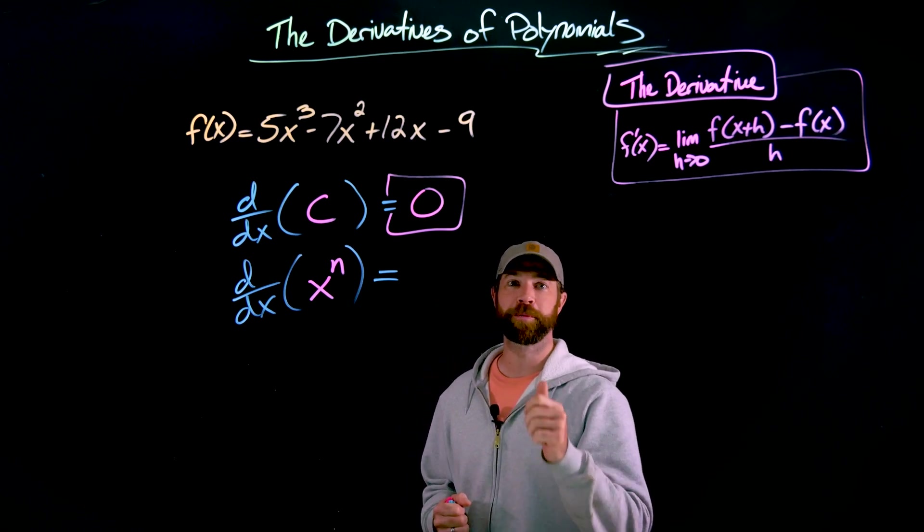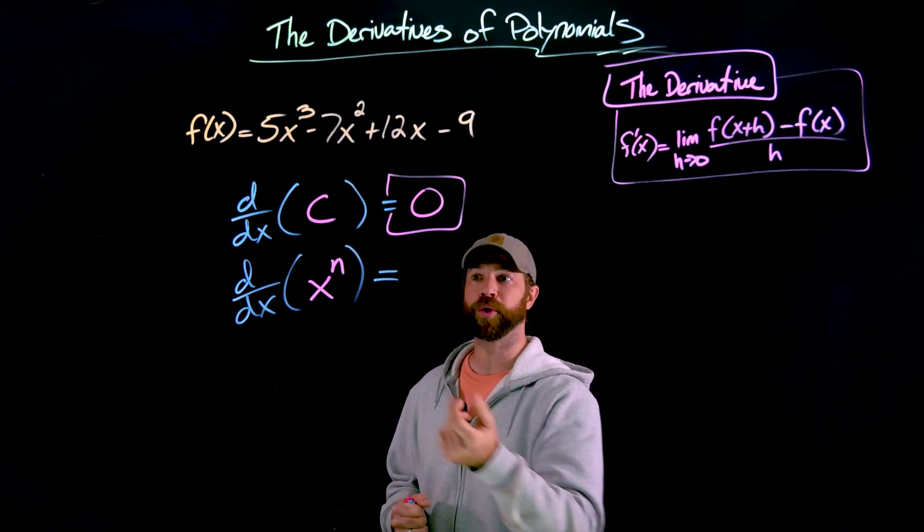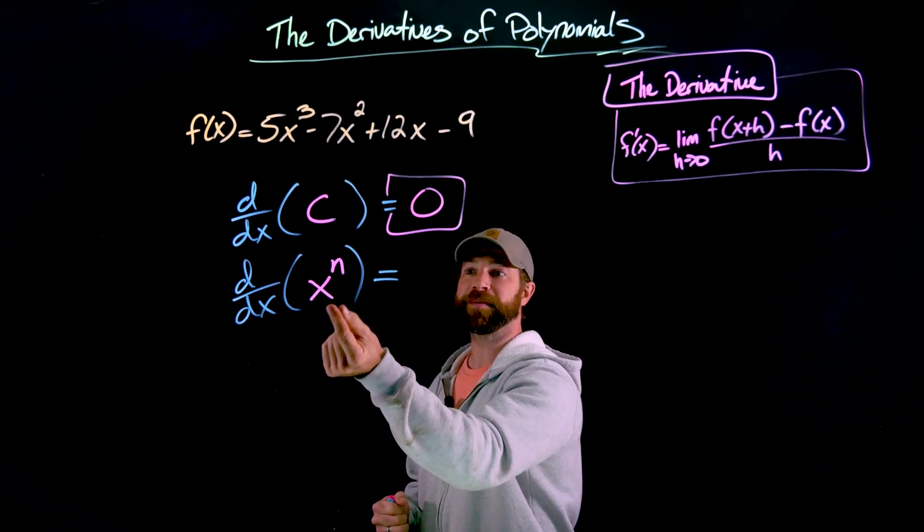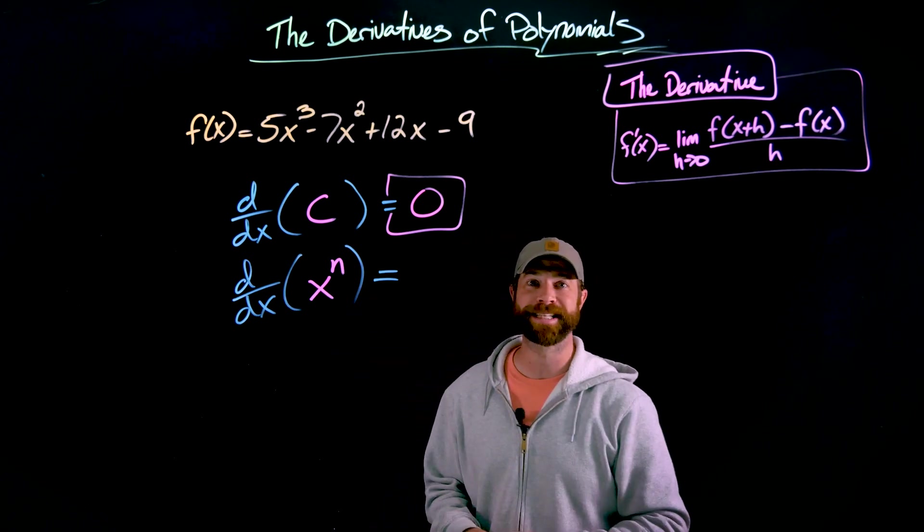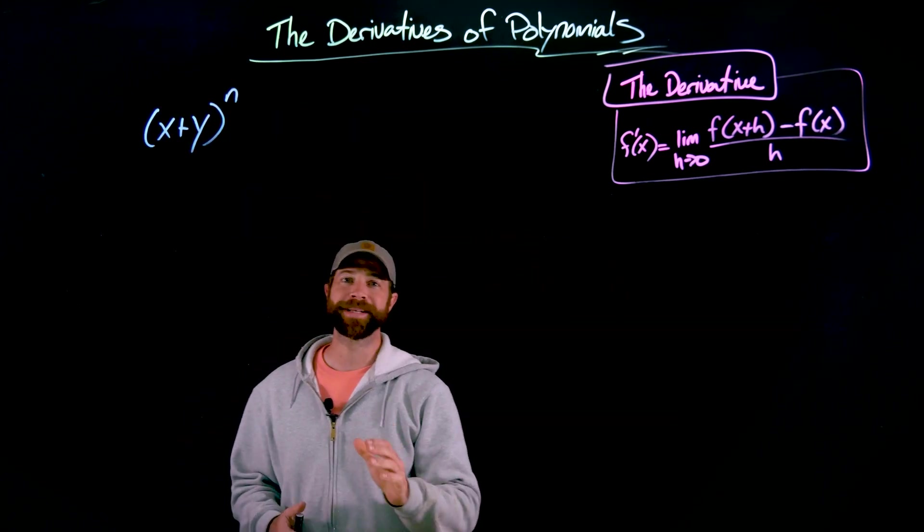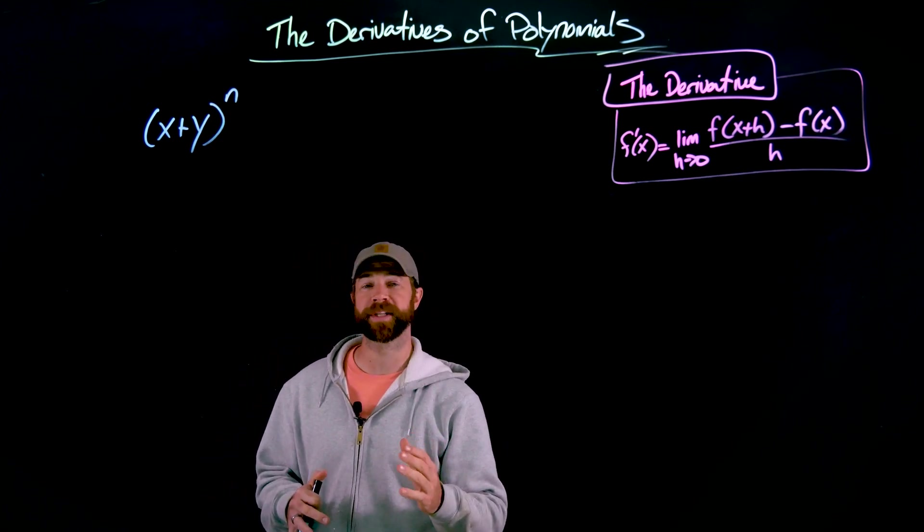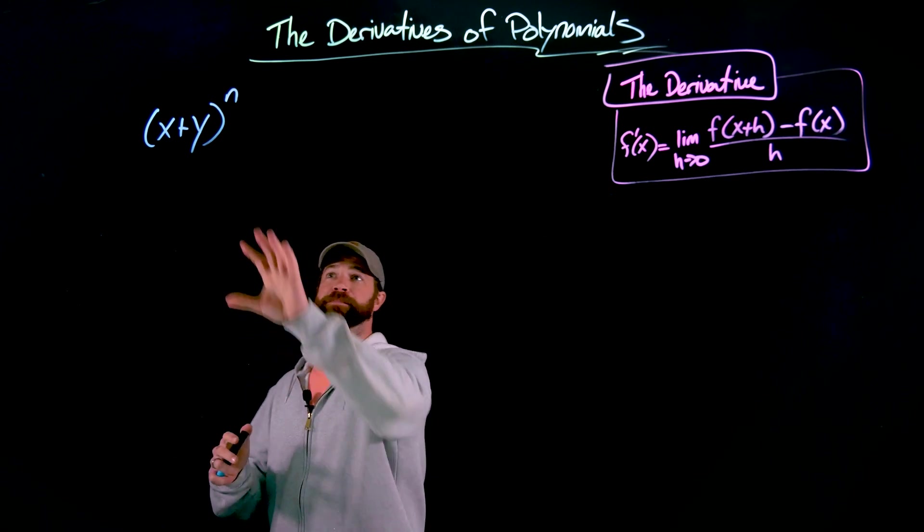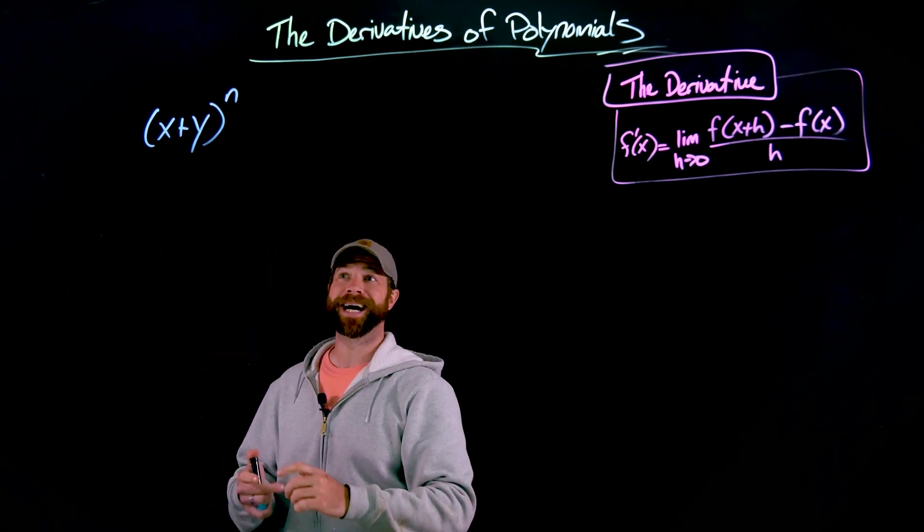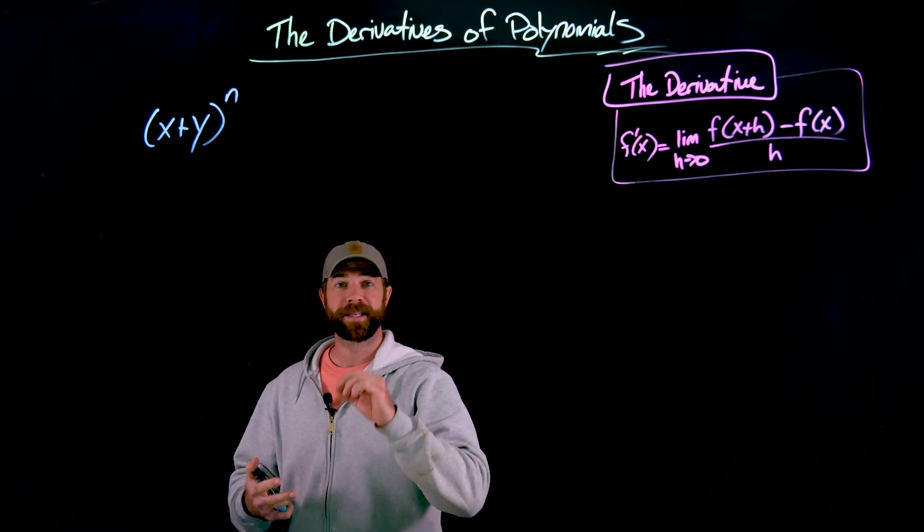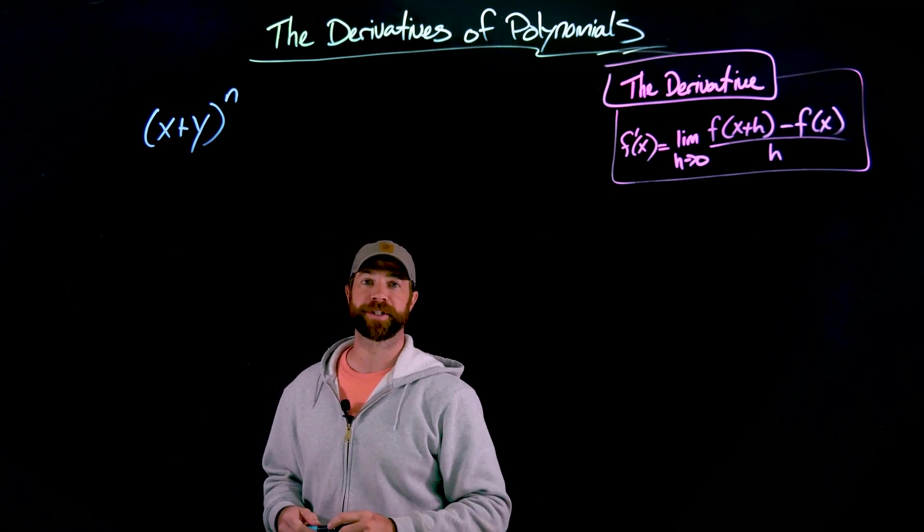The rest of this video will be dedicated to showing you the rule for attacking the general form of x to the n, again, where n is a positive integer. First up is the binomial theorem. The binomial theorem is something that maybe you've seen previously. It's a formula for expanding binomials of this type, x plus y raised to the nth power, where n is a positive integer.